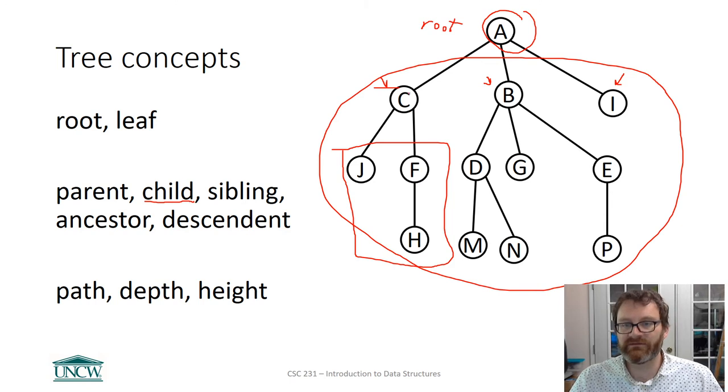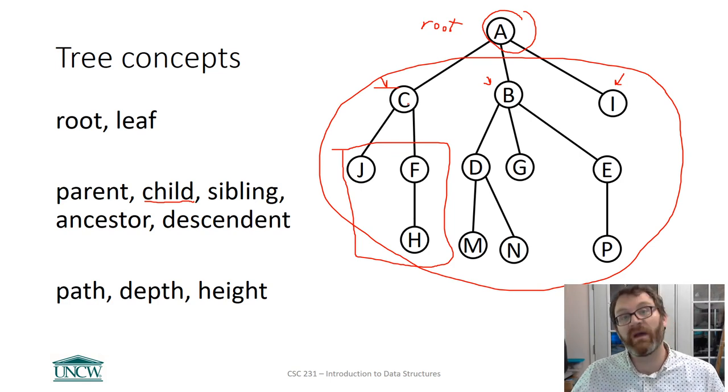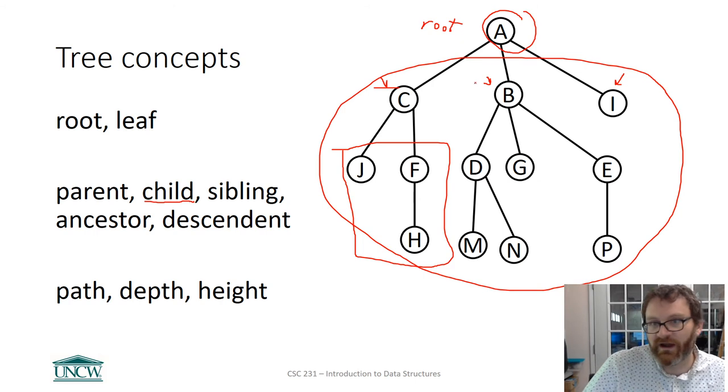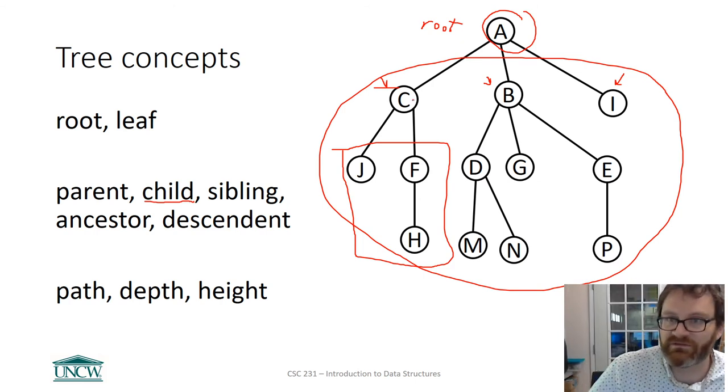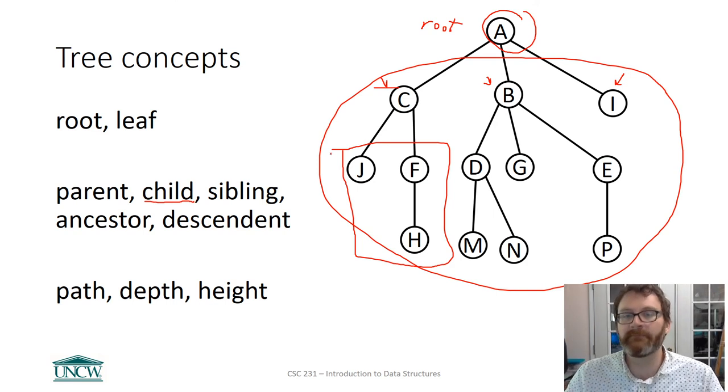All right. Who are the siblings of C? Well, what is a sibling in real life? A sibling is someone, or people with common parents. So C's siblings are B and I. These people, D, G, E, and then I'm out, these are not siblings of C. C's siblings are just like you. Your cousins are not your siblings. Your siblings are only your brothers and sisters if you have them. So that's the concepts here.